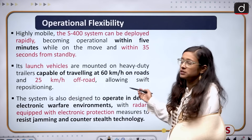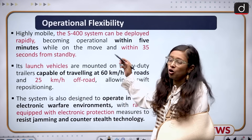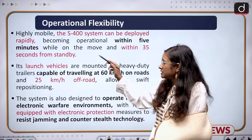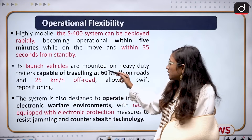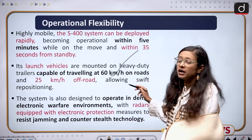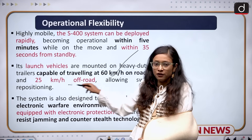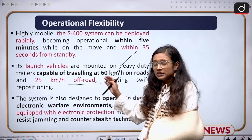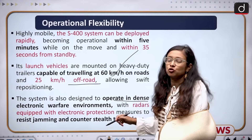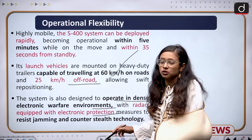Regarding operational flexibility, the S-400 can become operational within 5 minutes while on the move and within 35 seconds from standby. Its launch vehicles are mounted on heavy-duty trailers capable of traveling at 60 kilometers per hour on road and 25 kilometers per hour off-road. The system is also designed to operate in dense electronic warfare environments, equipped with electronic protection.